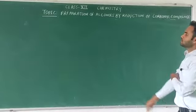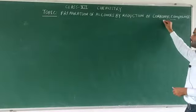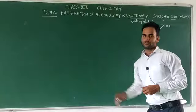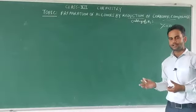In this video we will discuss the preparation of alcohols by reduction of carbonyl compounds. Carbonyl compounds are those in which carbon is combined with oxygen via a double bond. Reduction means adding of hydrogen, and we are doing this with carbonyl compounds to form alcohols. There are four types of carbonyl compounds: aldehyde, ketone, carboxylic acid, and ester.